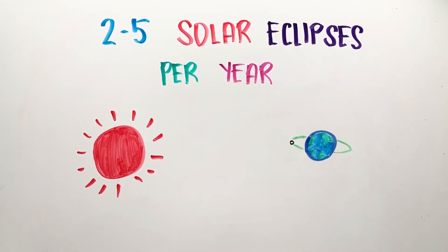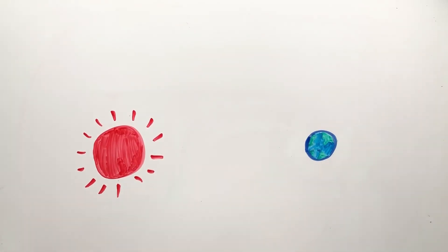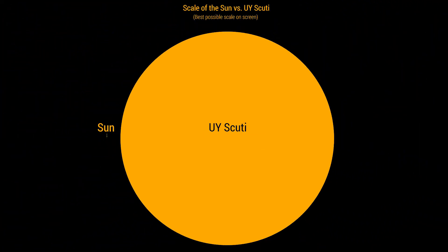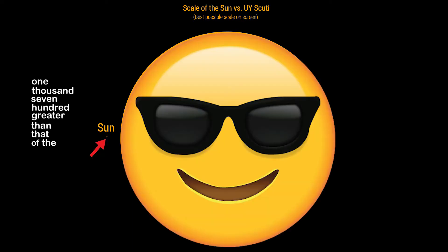The Sun is actually small compared to other stars. Even though 1.3 million Earths can fit inside the Sun, it's actually miniature compared to UY Scuti, a red supergiant star with an estimated radius 1,700 times greater than that of the Sun. If it were placed in the middle of our solar system, it would engulf all the way to the orbit of Jupiter.